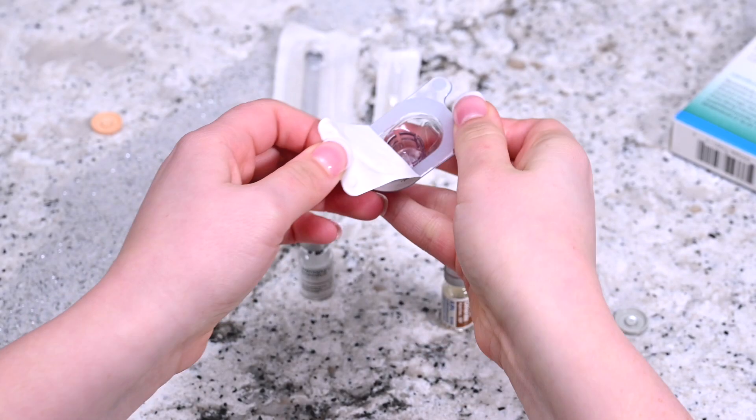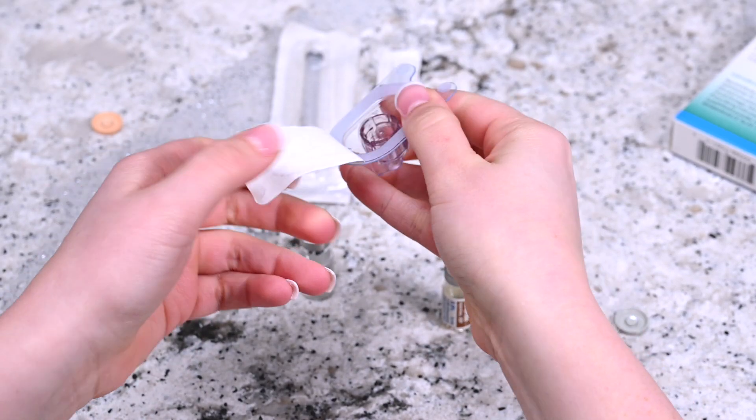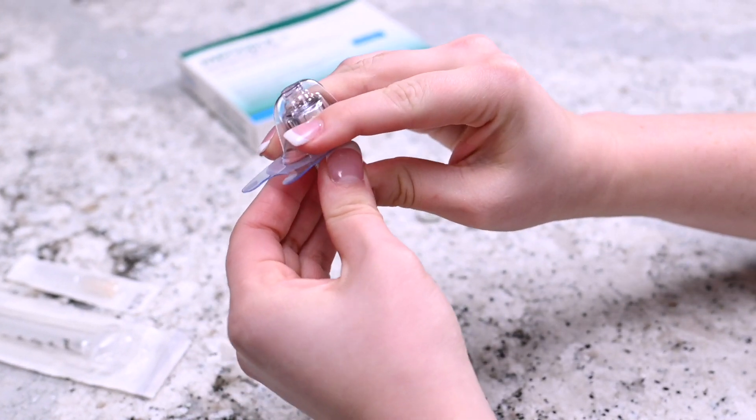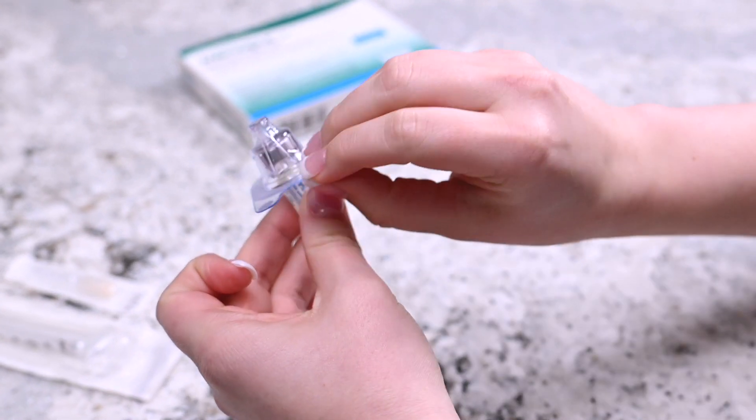Put back the top of the q-cap packaging but do not remove q-cap from packaging. Puncture the top of the sterile diluent with a q-cap needle. Remove the remaining plastic packaging.